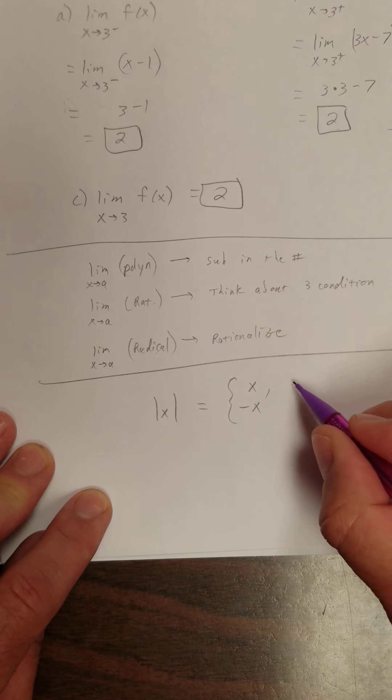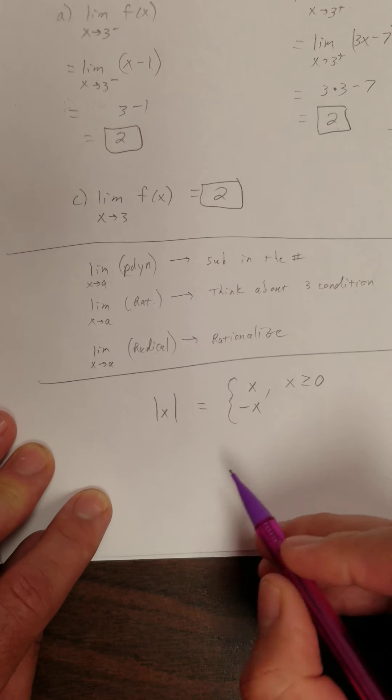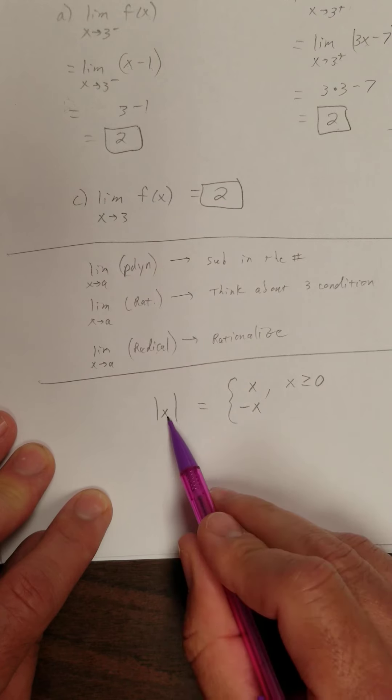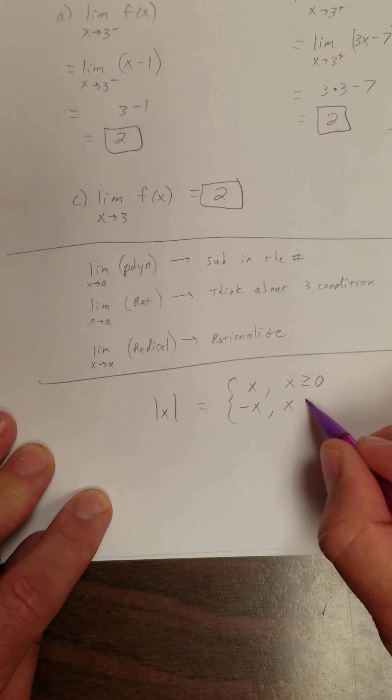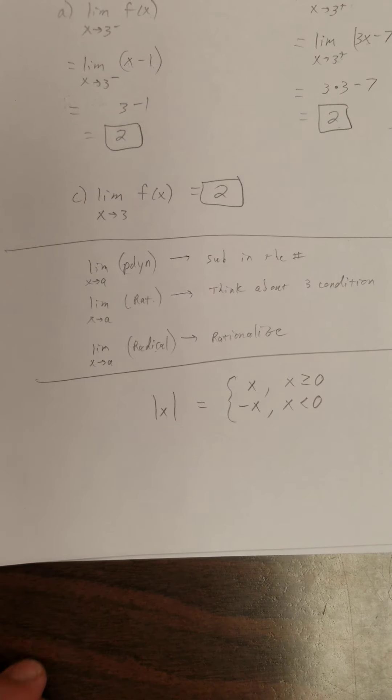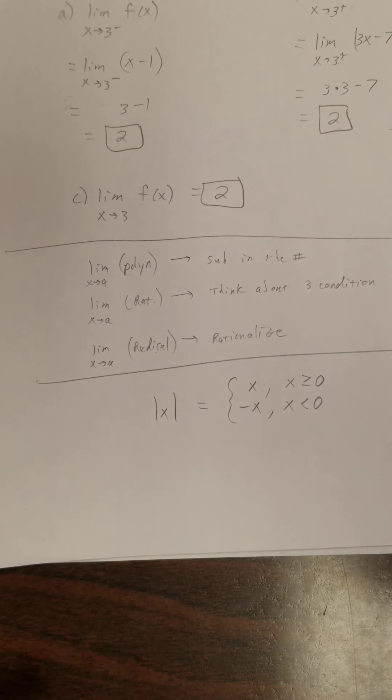And we're going to rewrite this as a piecewise defined function. Absolute value of x is equal to x if x is greater than or equal to 0. Absolute value of x is equal to the opposite of that x value if x is less than 0. I want y'all to play around with that. Put in numbers and see if that makes sense. That's really going to help you out with the next section.